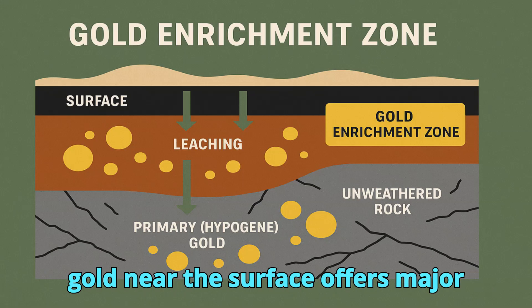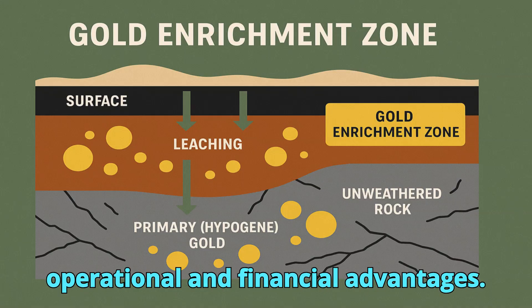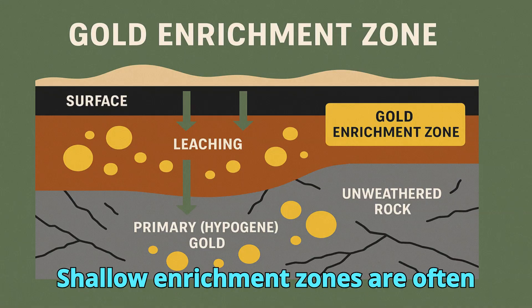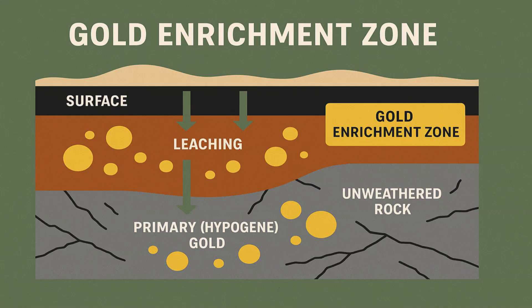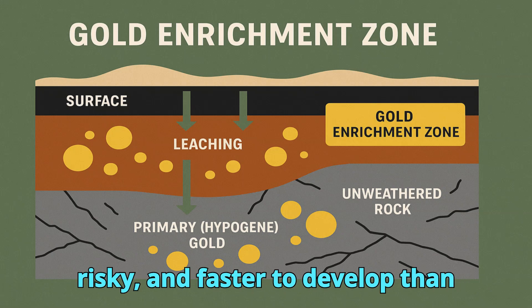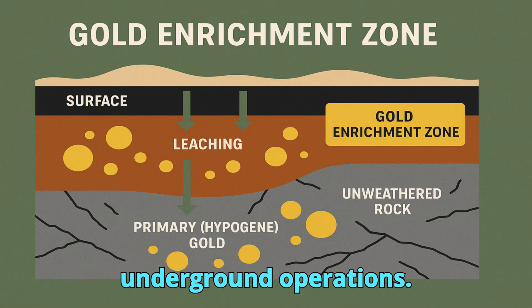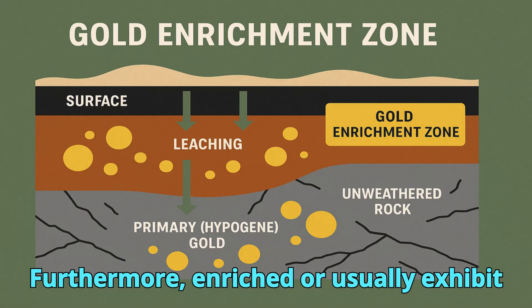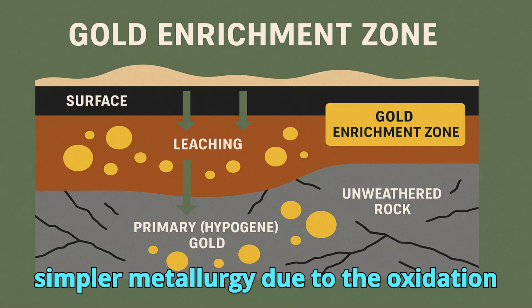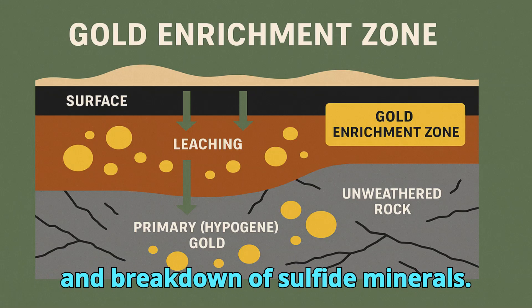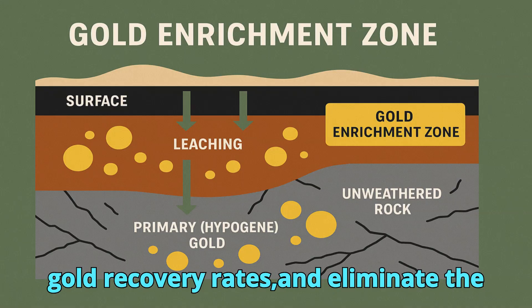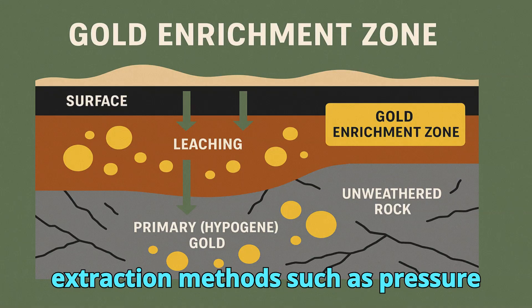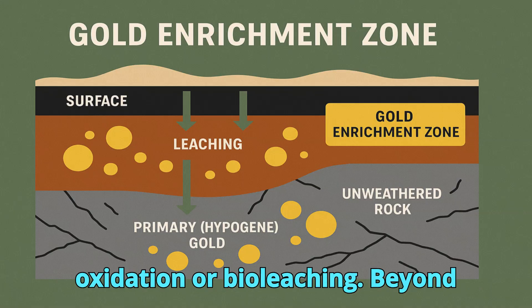This concentration of gold near the surface offers major operational and financial advantages. Shallow enrichment zones are often accessible via open-pit mining methods, which are typically less expensive, less risky, and faster to develop than underground operations. Furthermore, enriched ore usually exhibits simpler metallurgy due to the oxidation and breakdown of sulfide minerals. This can reduce processing costs, improve gold recovery rates, and eliminate the need for more complex and hazardous extraction methods such as pressure oxidation or bio-leaching.